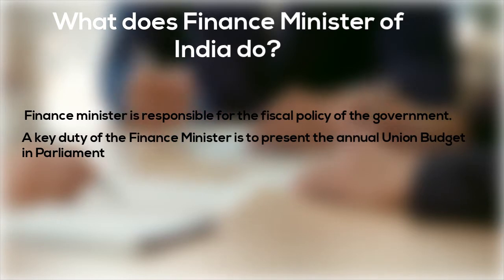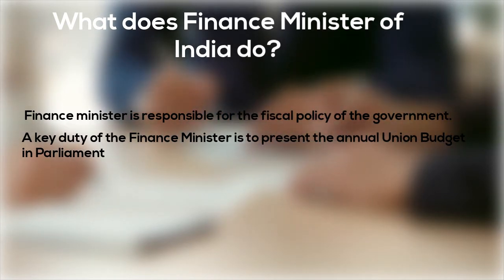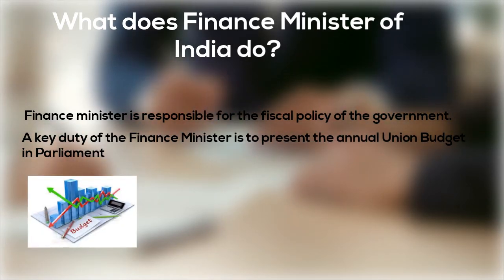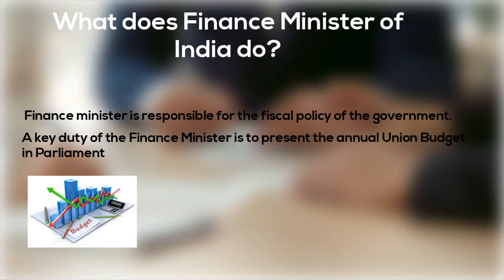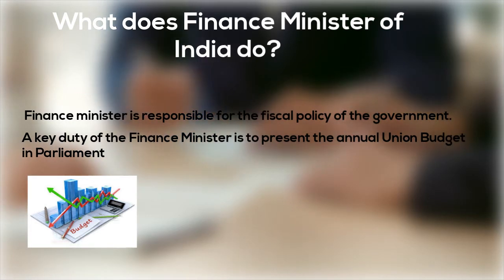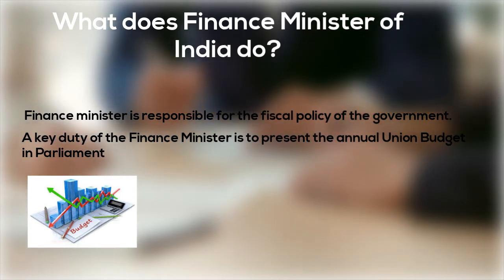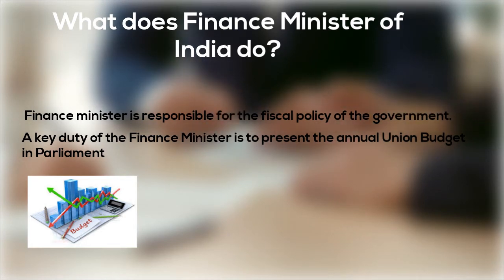A key duty of the Finance Minister is to present the annual union budget in Parliament. The union budget is the government's plan for taxation and spending in the coming financial year, which is presented in February. Through the budget, the Finance Minister also outlines the allocation of funds to different ministries and departments.